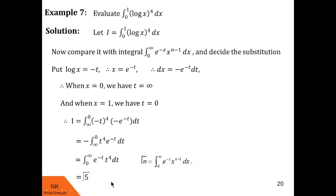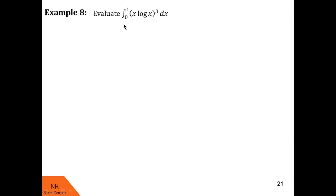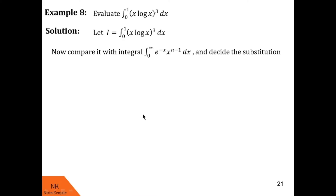Now let us go ahead with example number 8. Here we are asked to evaluate the integral from 0 to 1 of x · (log x)³ dx. Once again, we begin by labeling this integral as i. Then we compare this integral with the integral definition of gamma of n, which is the integral from 0 to infinity of e^(-x) · x^(n-1) dx. And we decide an appropriate substitution which will transform this integral into this form.